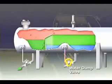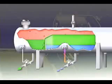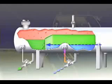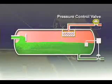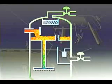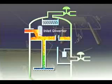An interface level controller senses the height of the oil-water interface. This controller signals the water dump valve to release as much water from the vessel as is needed to maintain the oil-water interface at design height. The gas flows horizontally and exits through a mist extractor to a pressure control valve, which maintains constant vessel pressure.